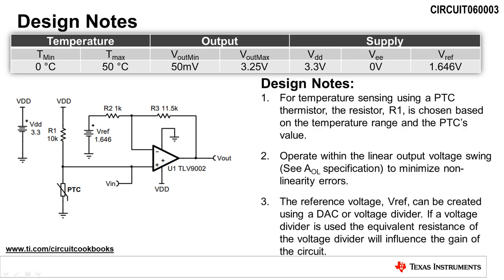When designing a temperature sensing circuit with a PTC thermistor, there are a few design notes to be aware of. First, the resistor R1 is chosen based on the temperature range and the PTC's value. Next, be sure to always check the linear output swing of the amplifier, which is usually given in the condition section of the AOL datasheet specification. Finally, the reference voltage VREF can be created using a DAC or voltage divider. However, if a voltage divider is used, the equivalent resistance of the voltage divider will influence the gain of the circuit, so it should be buffered with an op amp.